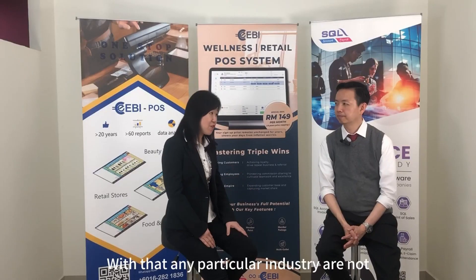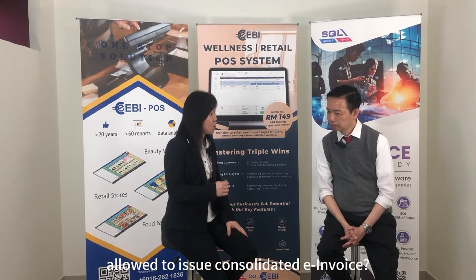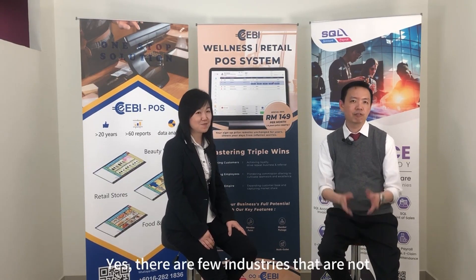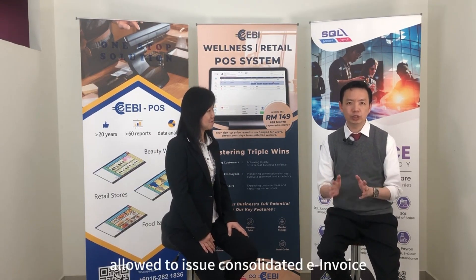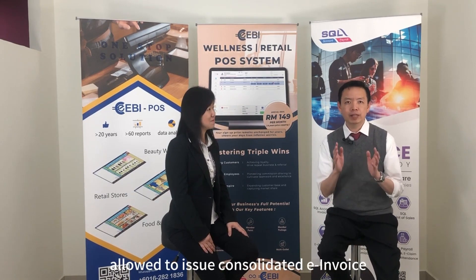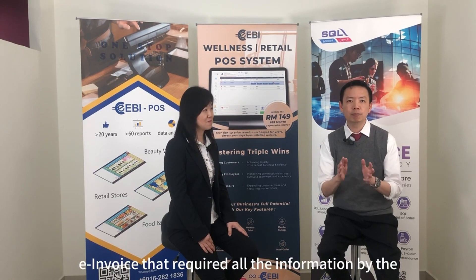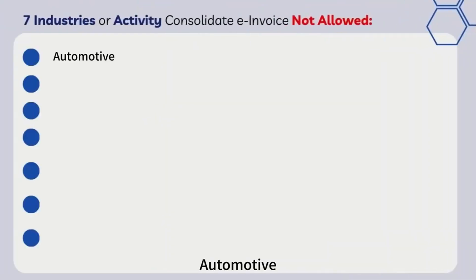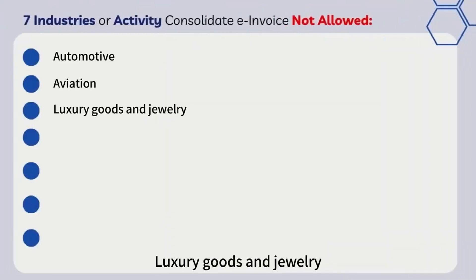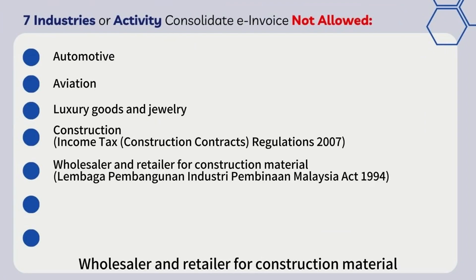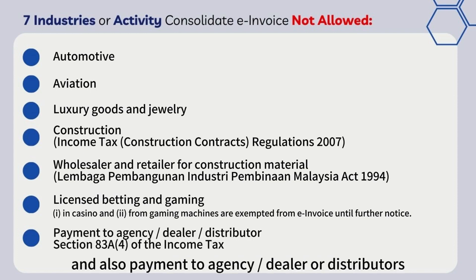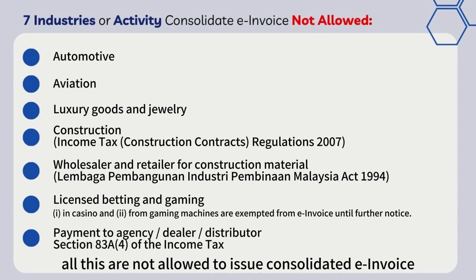Are there particular industries not allowed to issue consolidated e-invoice? Yes, there are a few. They must issue normal e-invoices that include all required customer information. These industries are: automotive, aviation, luxury goods and jewelry, construction, wholesalers and retailers of construction materials, licensed betting and gaming, and payments to agents, dealers, or distributors. All these industries are not allowed to issue consolidated e-invoice.